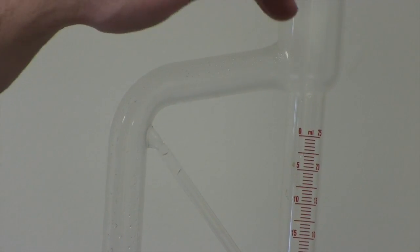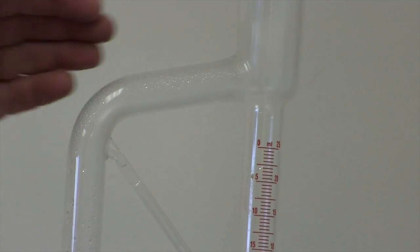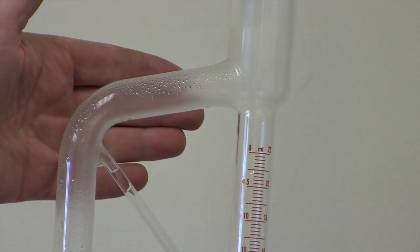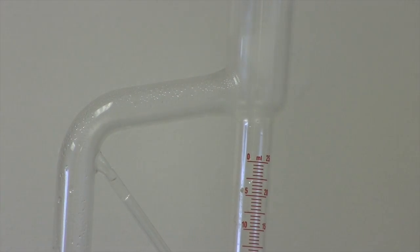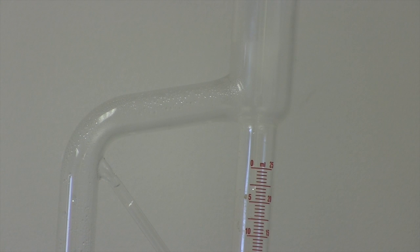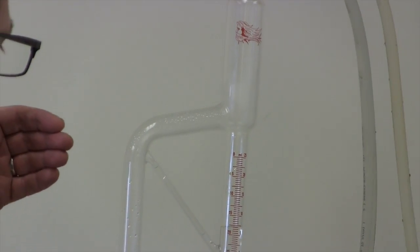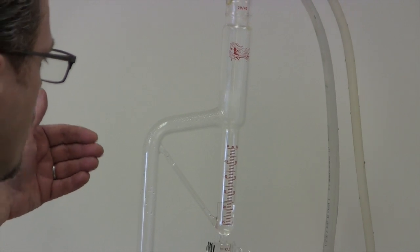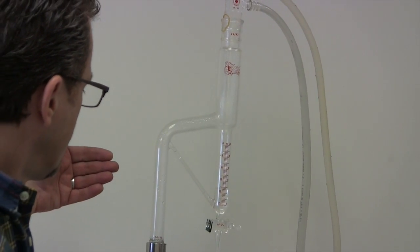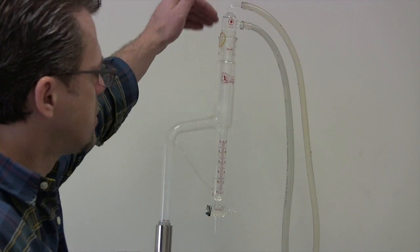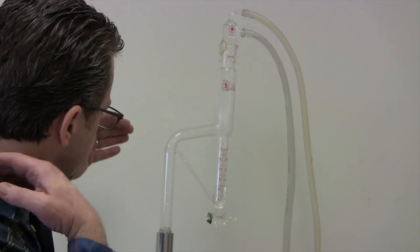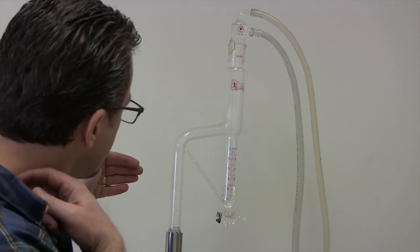we'll start to see drops of water and oil coming over. And it'll start coming over really at a pretty good clip. At which point we will want to kind of regulate how fast it comes over. We don't want it really coming over too fast, because then we'll lose some oil at the top. So I'll moderate the temperature once that starts.